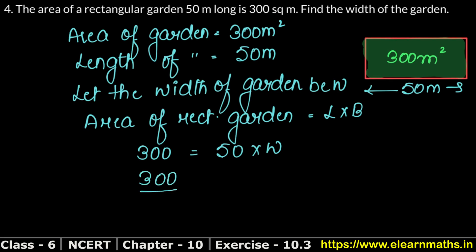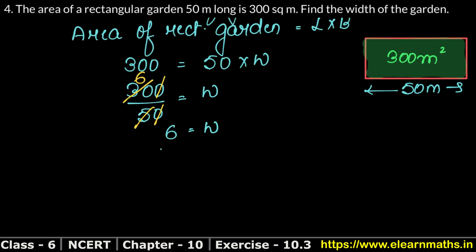300 divided by 50 equals W. Canceling the zeros: 300 divided by 50 gives us 6. So 6 equals W, or W equals 6.